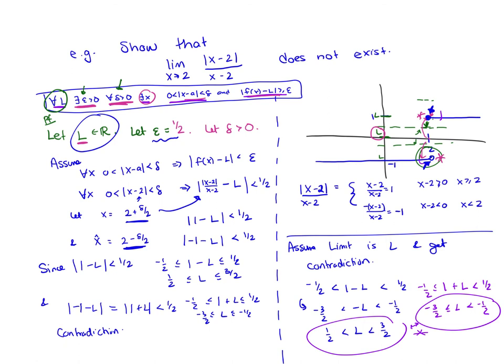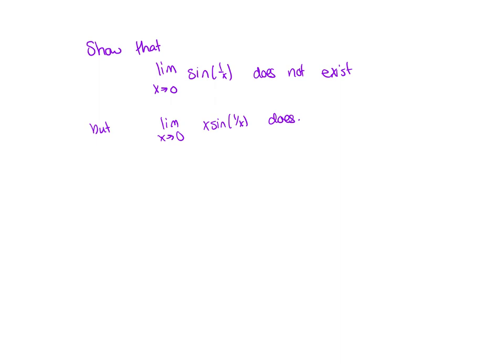These limit-doesn't-exist proofs are definitely complicated. I encourage you to read back through this and see if you can figure out where all the pieces came from. You can compare it to the proof in the book — they have a slightly different way of doing it but it all comes down to the same thing. One more question we'll work on together in class: showing that the limit as x goes to 0 of sin(1/x) does not exist, but the limit as x goes to 0 of x times sin(1/x) does exist. Look at the graphs of these functions in advance to get a feel for what they look like.